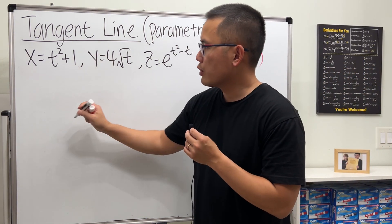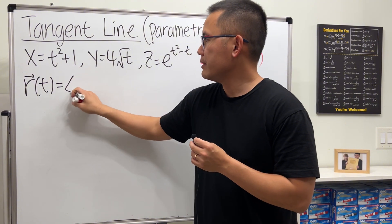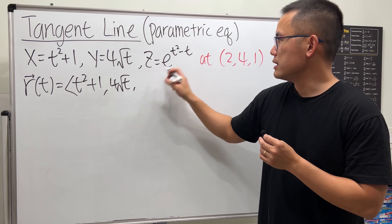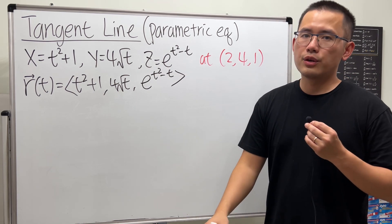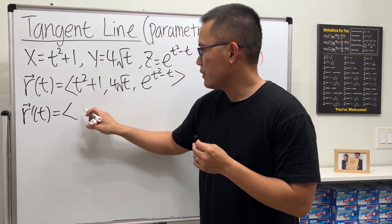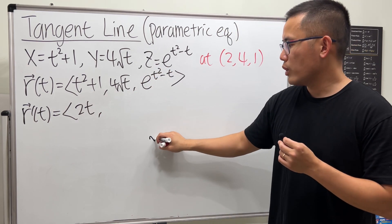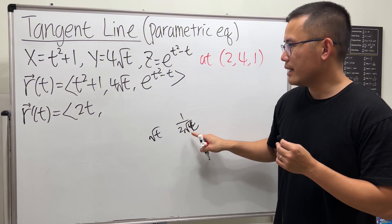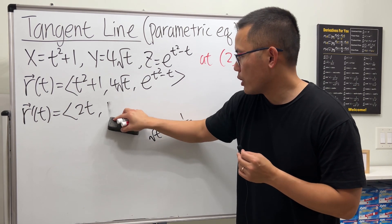Alright, another one. Let's go ahead and put this into vector function form as R of T, with the X component, Y component, and also the Z component. Now let's take the derivative: we get 2T for X, and the derivative of the square root of T gives us 1 over 2 root T, multiplied by 4, so that's 2 over square root of T.